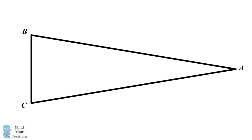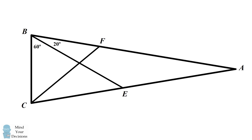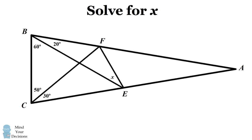Hey, this is Presh Tallwalker. In triangle ABC, draw line segment BE, which divides angle B into 60 degrees and 20 degrees. Now draw line segment CF, which divides angle C into 50 degrees and 30 degrees. Finally, draw line segment EF. Label angle BEF by the variable X. The problem is to solve for the value of X in this diagram.